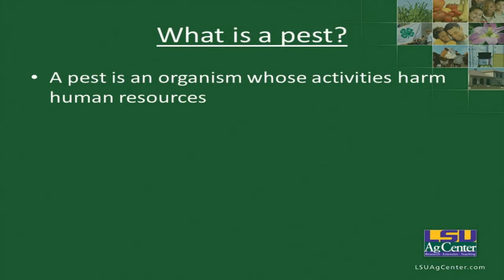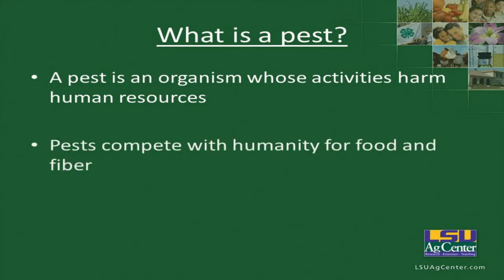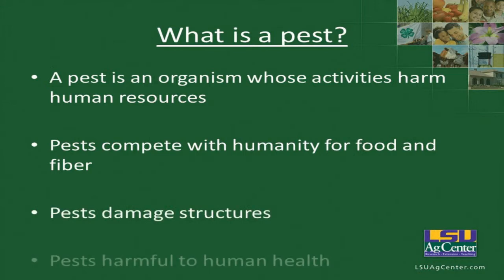What is a pest? A pest is any organism whose activities harm human resources. Pests compete with humanity for food and fiber, and that's why we try to reduce insects. Pests damage structures like termites, and pests are harmful to human health.